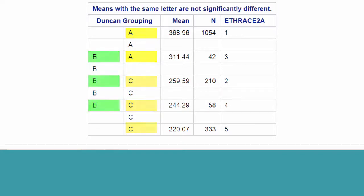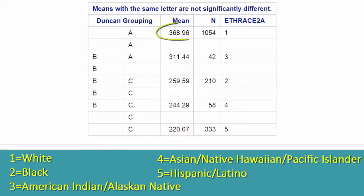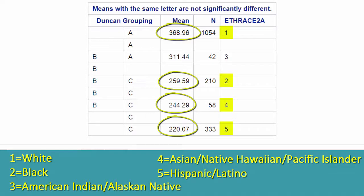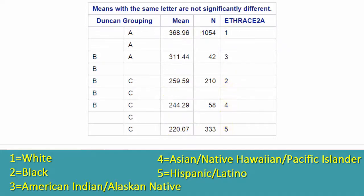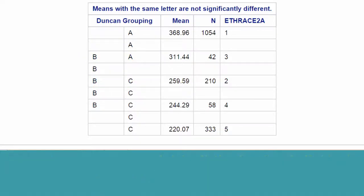So where are the significant differences? Group 1, which indicates white ethnicity, smokes significantly more cigarettes per month than ethnic groups 2, 4, and 5 — that is Black, Asian, and Hispanic or Latino. Group 3, American Indian and Alaskan Native, smokes significantly more per month than group 5, which is Hispanic or Latino. Notice that some of the means have more than one letter next to them, so you need to be careful and follow the rule that means sharing even one letter in common are not significantly different from one another.